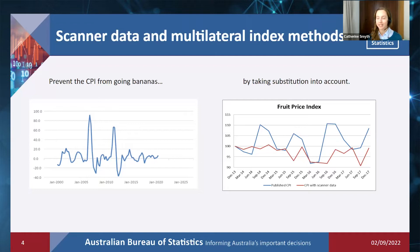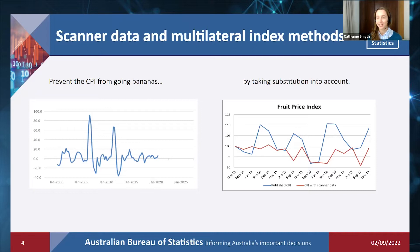This has been really handy throughout the pandemic, when there was a lot of consumer substitution — consumers buying whatever was available during panic buying periods. Even lately, when lettuce has been really expensive, fewer people will be buying lettuce, and we've been able to take that into account. The graph on the right shows our published CPI series in blue and the same series recreated using scanner data and multilateral index methods in red. You can see how much less volatile this approach is, because out-of-season products, which are typically more expensive, are not carrying such a high weight within the index.